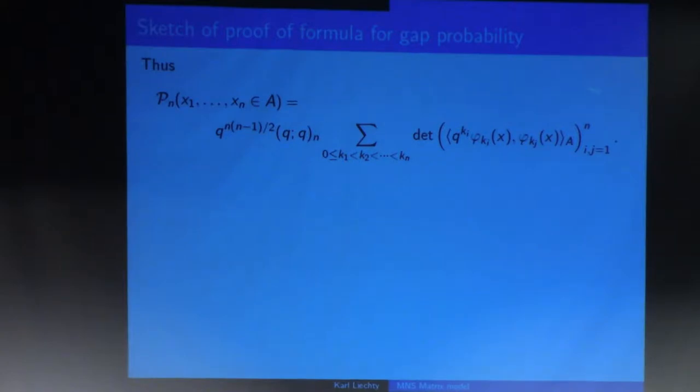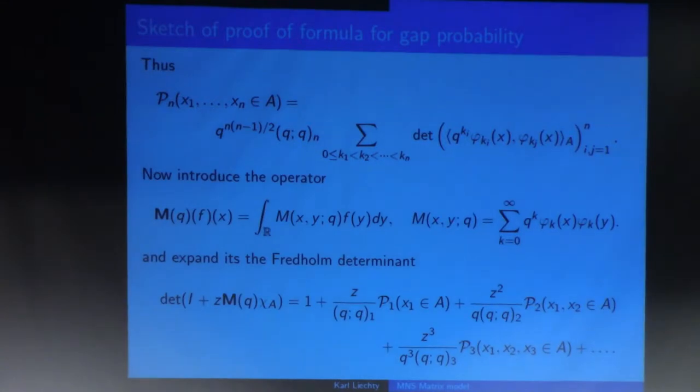So now I have a big sum of determinants that look like this. It looks a little bit better. And if I introduce an operator m, which is an integral operator, whose kernel is an infinite sum of Hermite functions weighted by q. So that's a relatively simple operator. I'll take that operator, and I'll expand its Fredholm determinant.